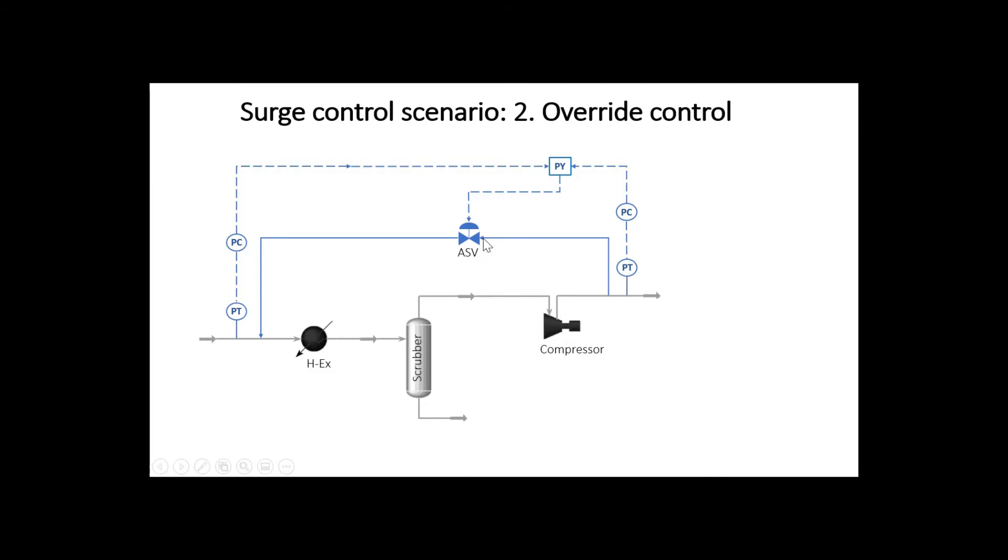Let's imagine pressure in the suction line decreases and pressure in the discharge line increases somehow caused by other disturbances. The discharge controller requires X percent opening in the anti-surge control valve, while suction controller requires Y percent. Here the override system, in this case the low selector, selects the lowest error, considers the worst case scenario and eventually satisfies both controllers.